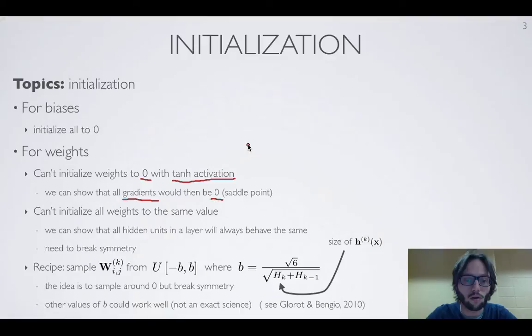And so if the gradients are zero, then you're updating your weights in the direction that's the vector of zero. So you're not changing the weights. And so this essentially corresponds to a saddle point. You've converged, quote unquote, and you can't move away from that initialization. So that's obviously a bad idea.